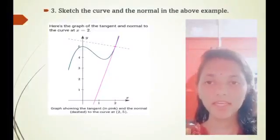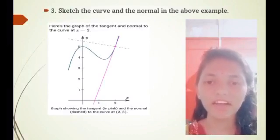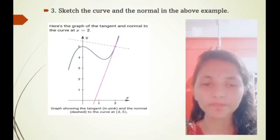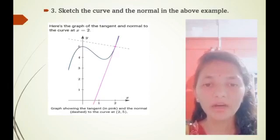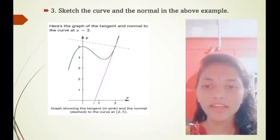Next, sketch the curve and normal in the above example. Take graph paper. Draw x-axis and y-axis on it. On y-axis plot 1, 2, 3, 4, and 5, and on x-axis plot 1 and 2. Here's the graph of the tangent and the normal to the curve at x = 2. Graph showing the tangent in pink and the normal dashed to the curve at (2, 5).